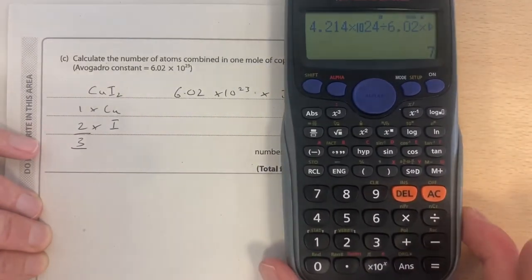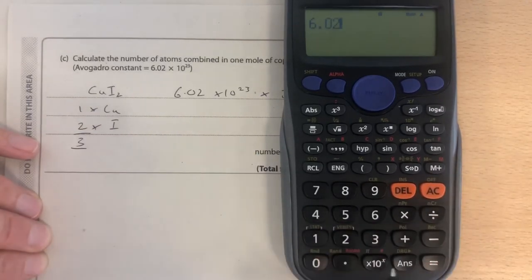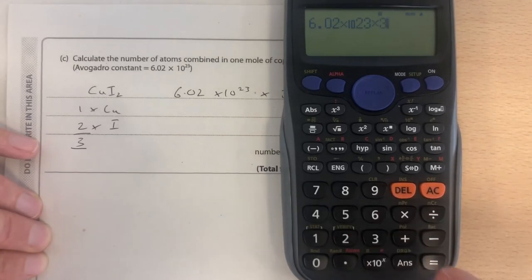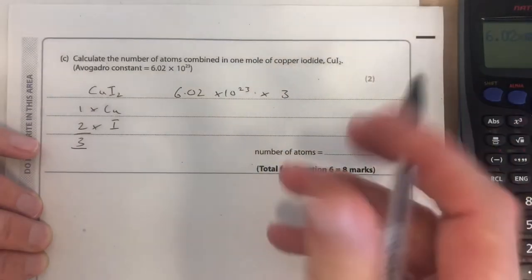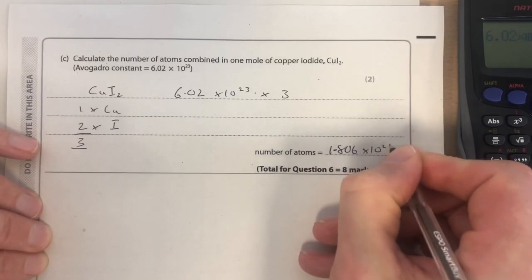Numbers into a calculator. 6.02, that button there we're going to remember, times 10 to the 23, multiplied by 3, equals 1.806 times 10 to the 24. Let's write that down. 1.806 times 10 to the 24.